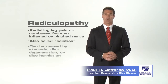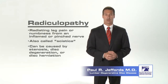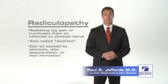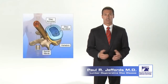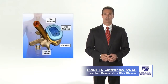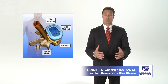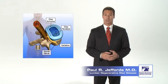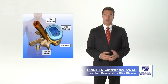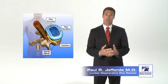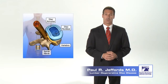Radiculopathy can be caused by several conditions, including stenosis, which is narrowing of the spinal canal, disc degeneration, and disc herniations. To understand disc degeneration, we need to take a closer look at the structure of the disc. Each spinal disc consists of two parts: a firm outer wall called the annulus, which is like a tough ligament made of fibers woven together, and a softer inner portion called the nucleus, which is like a firm gel.